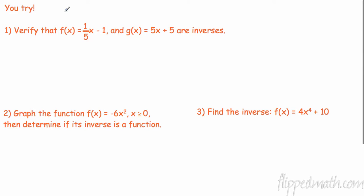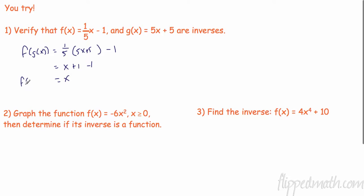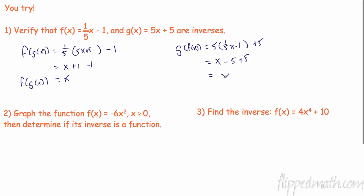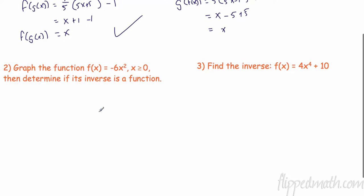Let's verify that f(x) = (1/5)x minus 1 and g(x) = 5x plus 5 are inverses. For f(g(x)): (1/5) times (5x plus 5) minus 1 = (1/5)(5) is x, and (1/5)(5) is 1, so we get x plus 1 minus 1 = x. That checks out. For g(f(x)): plug (1/5)x minus 1 into g: 5 times (1/5)x is x, and 5 times negative 1 is negative 5, plus 5 gives x. Both compositions equal x, so they are indeed inverses.